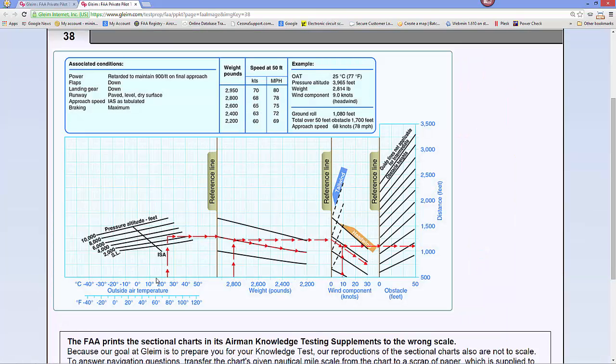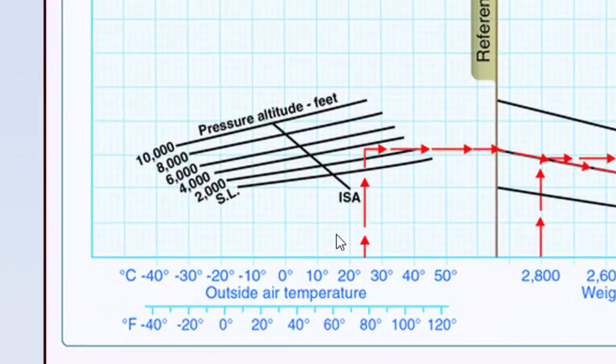Standard temperature at sea level is 15 degrees Celsius or 59 degrees Fahrenheit. The chart has a line drawn across it to help us know what international standard atmosphere is—in other words, the standard temperature for the corresponding altitude at a standard lapse rate. So at 10,000 feet, our standard temperature would intersect right here.